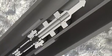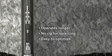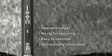With no moving parts, the JJ Tech downhole jet pump operates longer with reduced wear, servicing, and downtime. It needs no rig for servicing, is easy to optimize, and is retrieved to the surface by pumping in reverse.